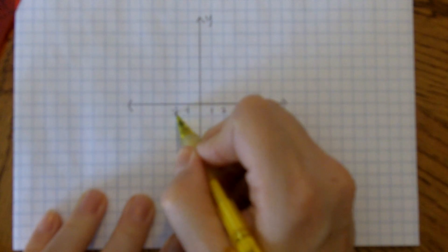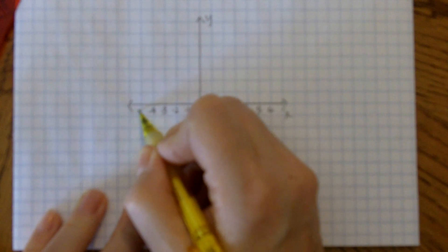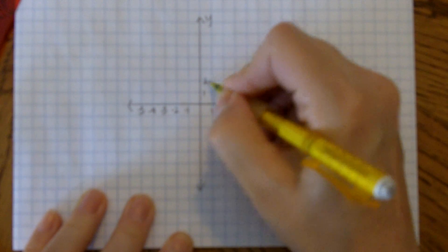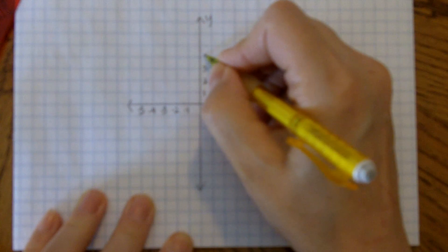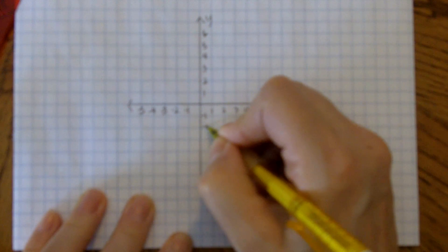Of course, positive goes to the right, negative goes to the left, and positive goes up, and negative goes down.